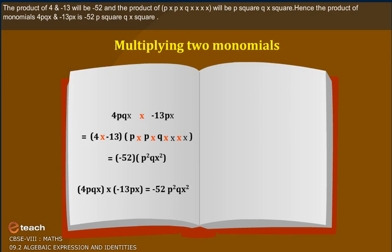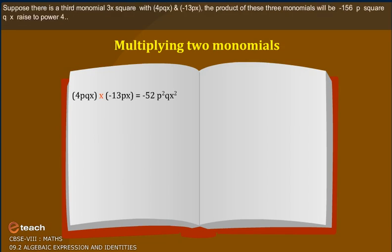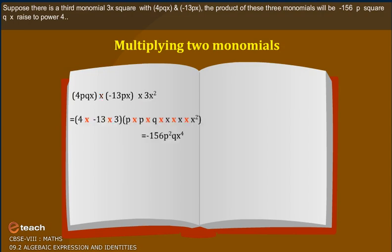Hence the product of monomials 4pqx and minus 13px is minus 52p squared qx squared. If Sarita can perform multiplication of two monomials easily, she can perform multiplication of three monomials too. Suppose there is a third monomial 3x squared multiplied into the result of 4pqx and minus 13px. The product of these three monomials will be minus 156p squared qx to the power 4.